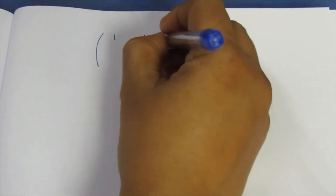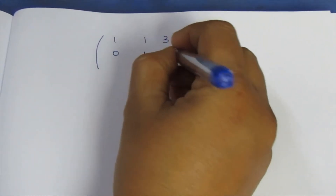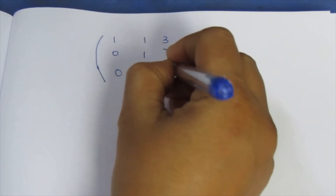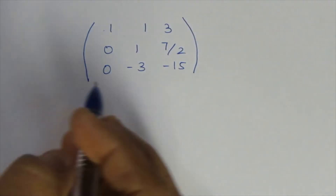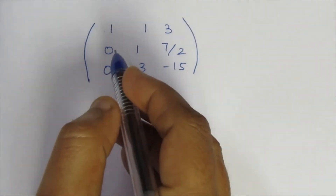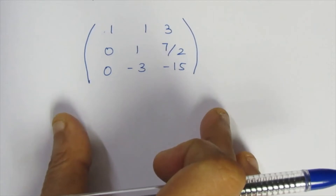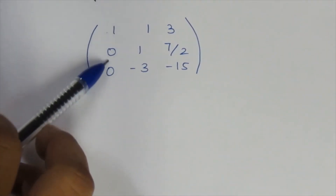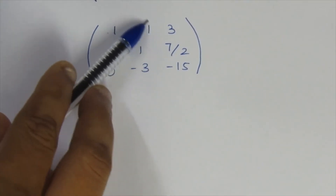After dividing row 2 by minus 2, we get 0, 1, 7 by 2 in that row. Then we have 0, minus 3, minus 15 in row 3. After dividing by minus 2, we obtain the answer. Now this entry is 0, this is 0, and this is 0, giving us 1.